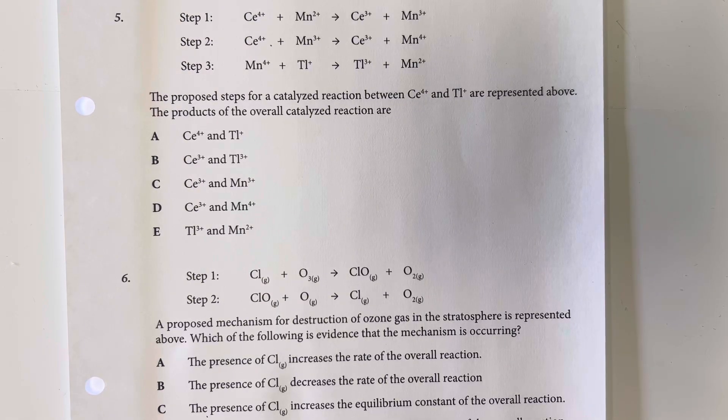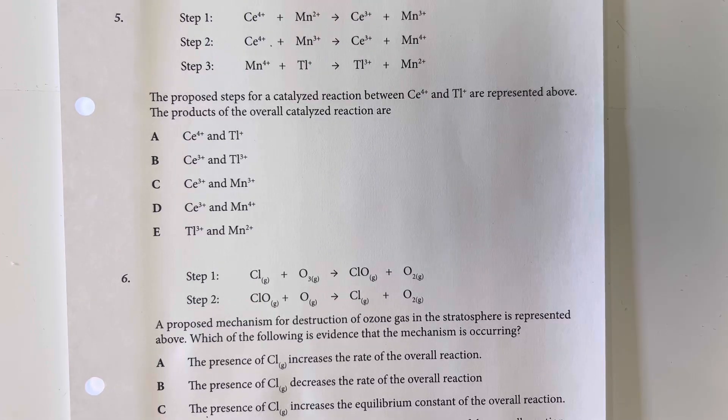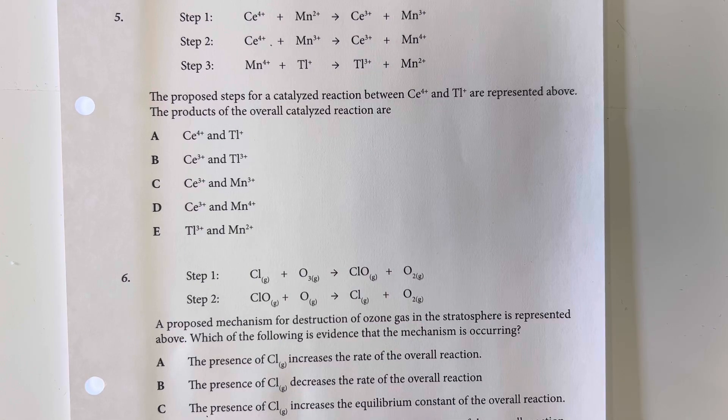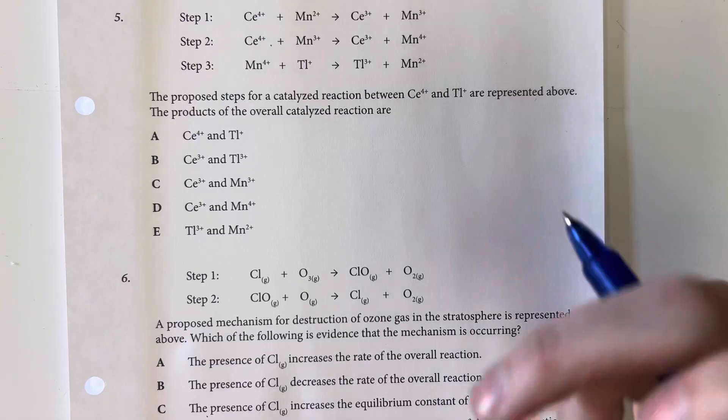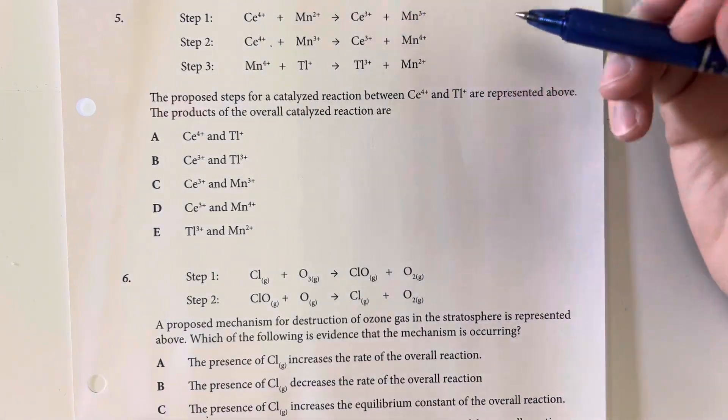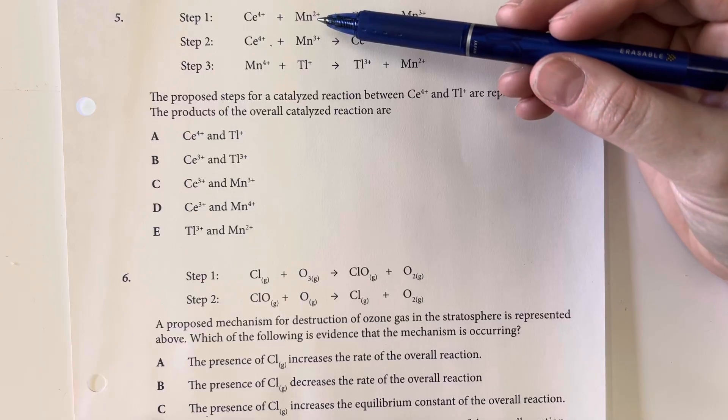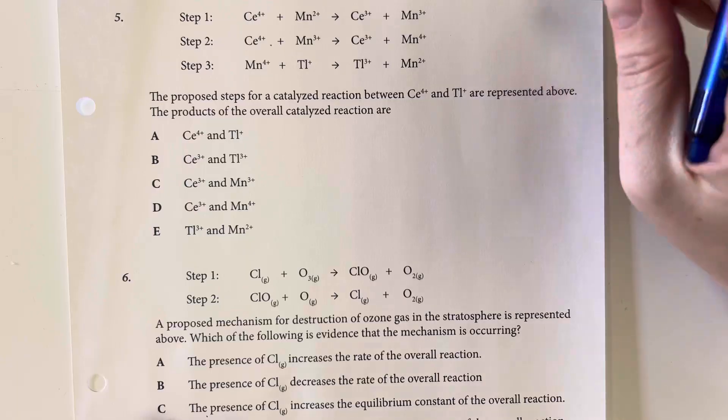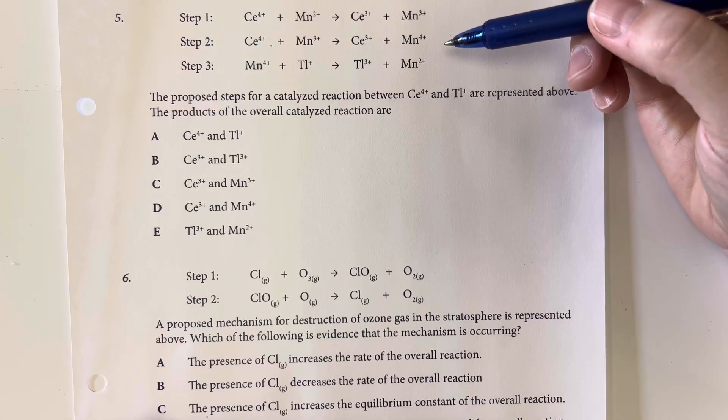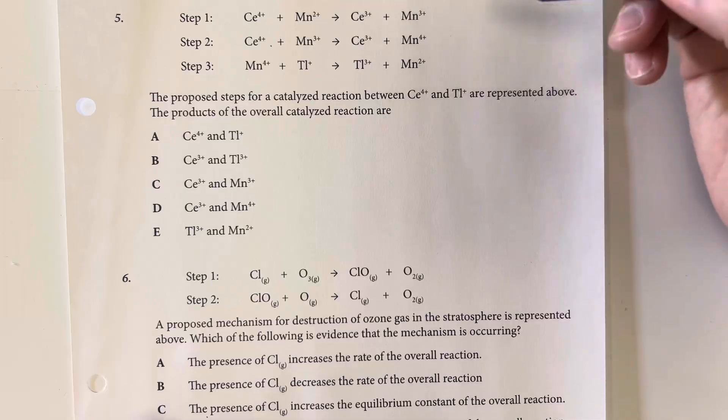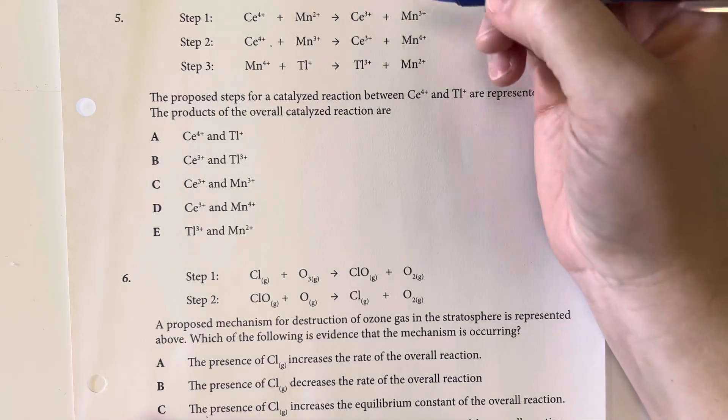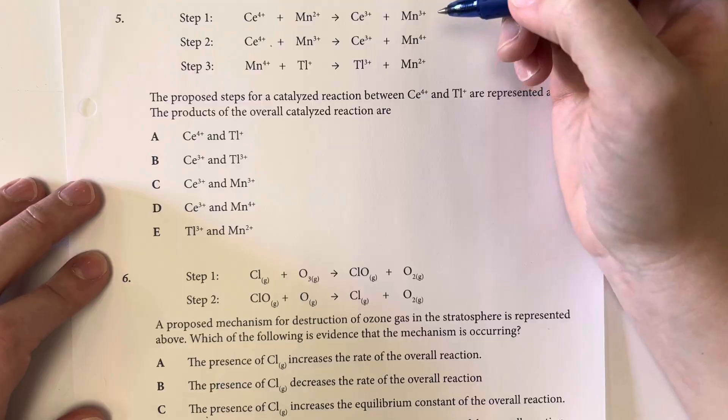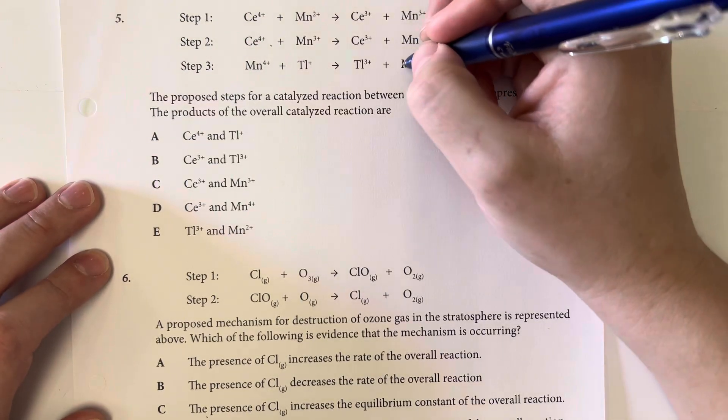The proposed steps for a catalyzed reaction between selenium-4 and thallium-1 are represented above, and the products of the overall catalyzed reaction are. Okay, so the products for the overall reaction, I am going to go ahead and combine everything and see what gets eliminated out.